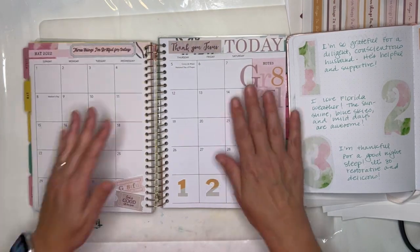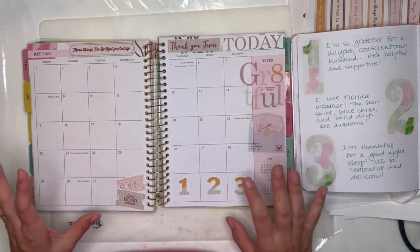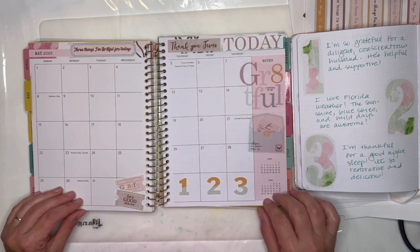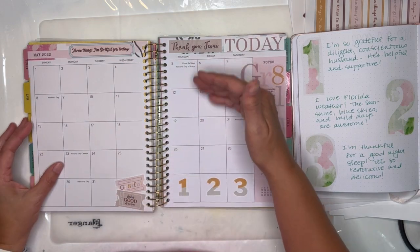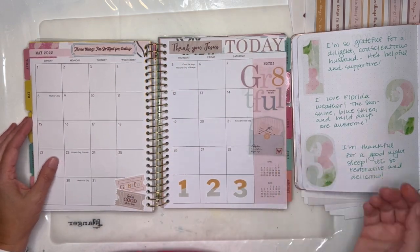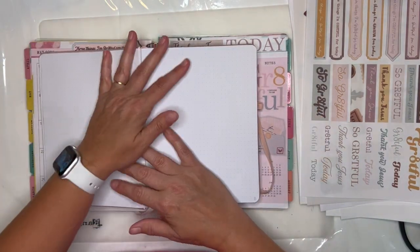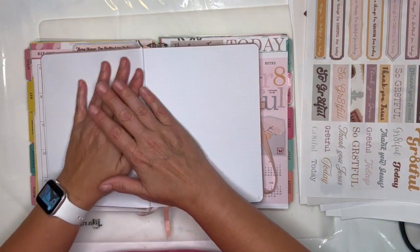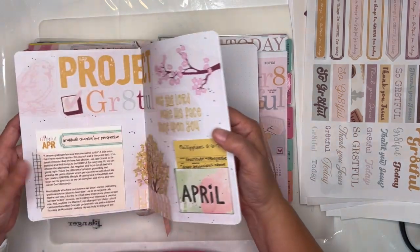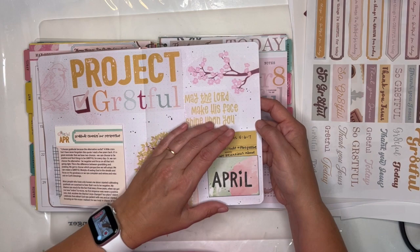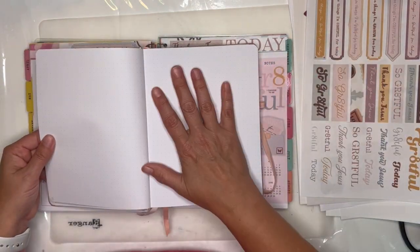What I found worked really well for me is in my faith planner if I set up my monthly spread and then write down one, two, three, three things that I'm thankful for. I went ahead and set up my monthly spread, so I will write every day of May the three things that I'm thankful for.